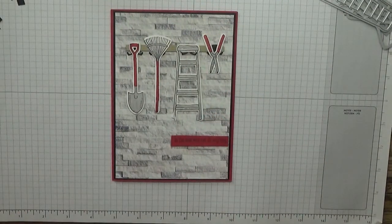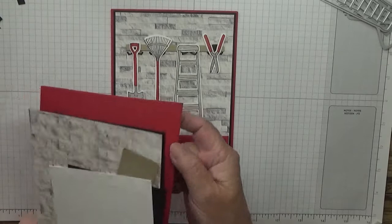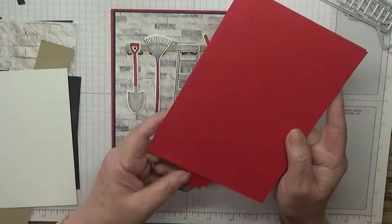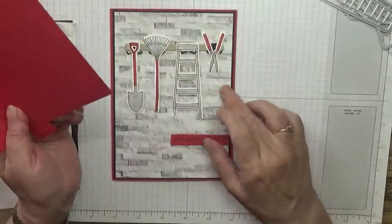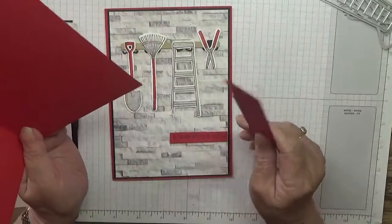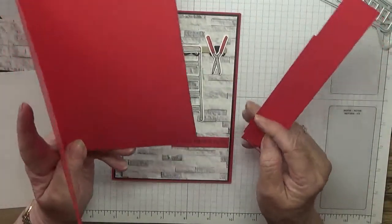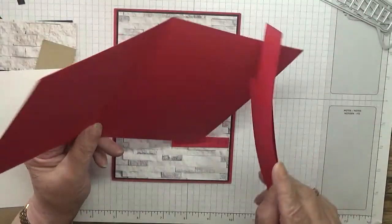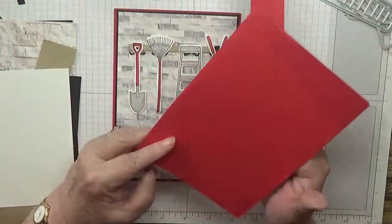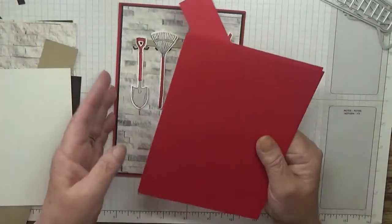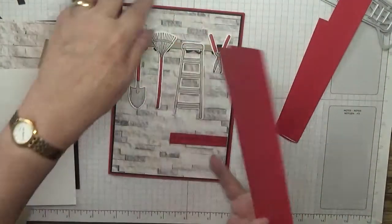Right, for the card base, I've done this in a 5x7 because I need some male cards. So I've got 10 inches by 7 inches, scored at 5 inches, and folded in half.